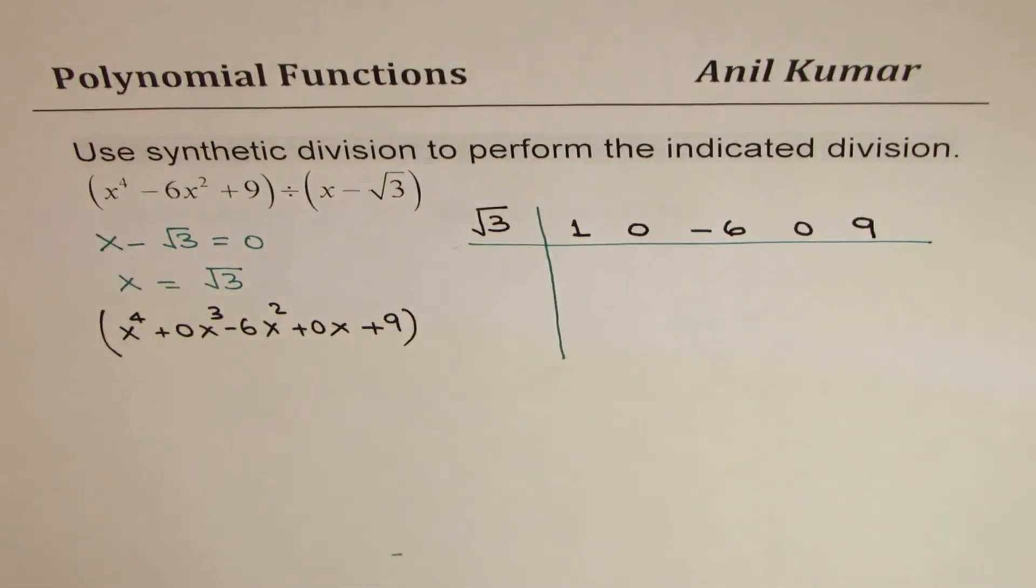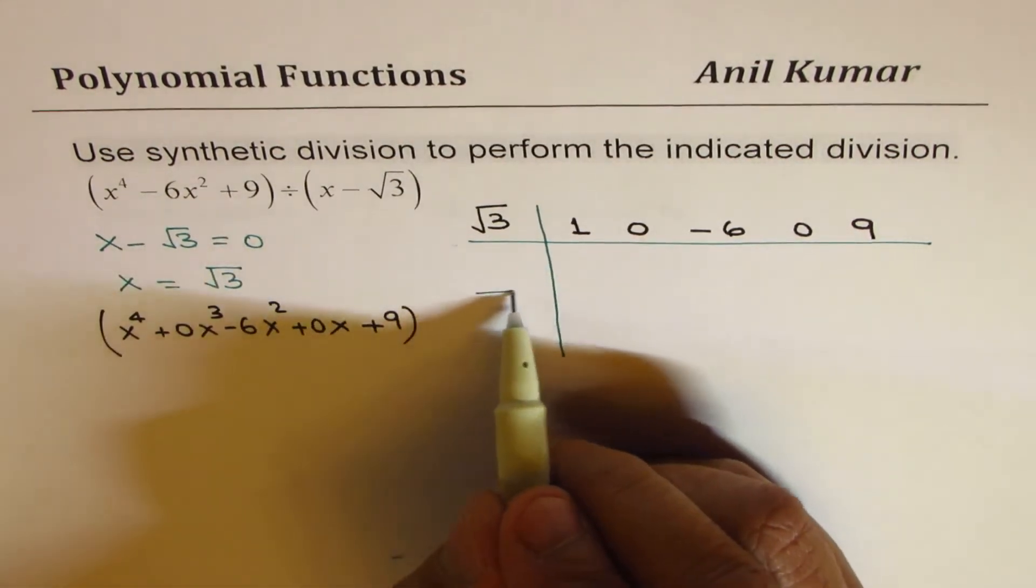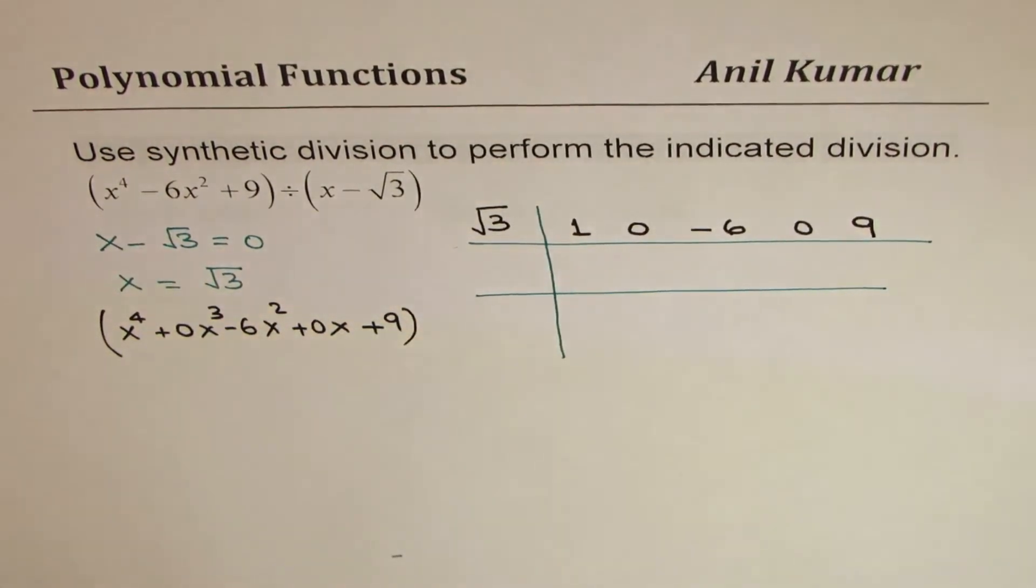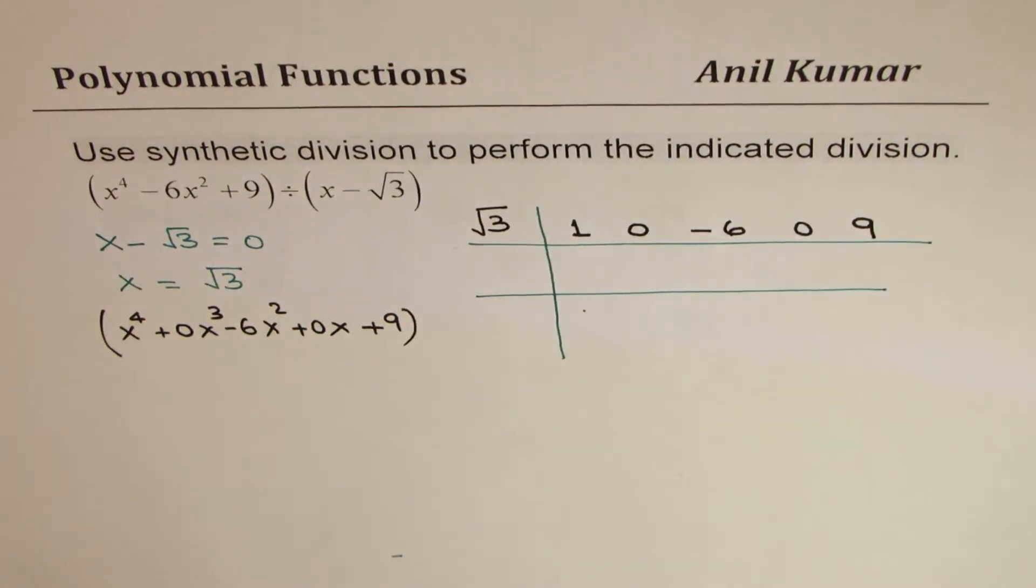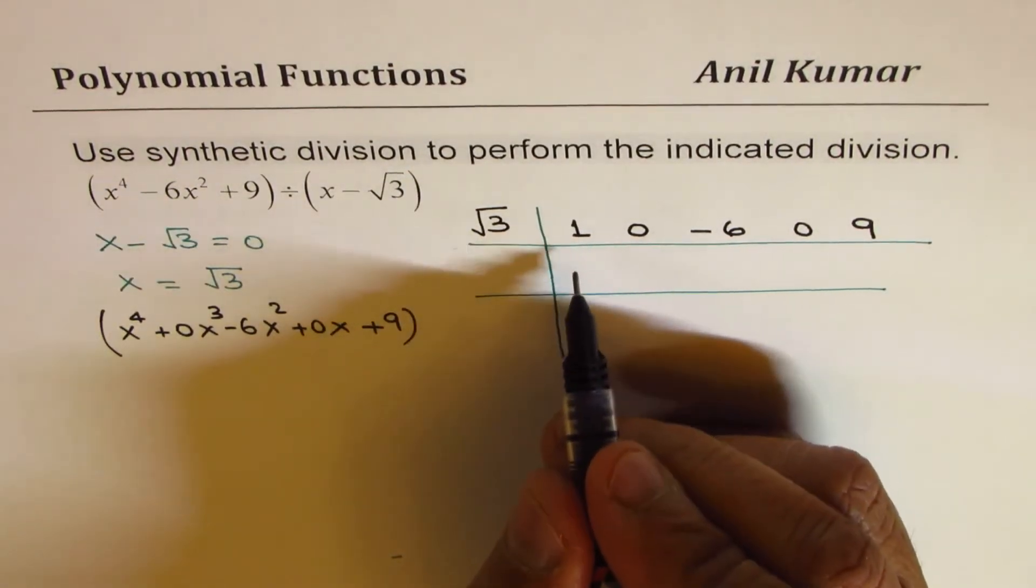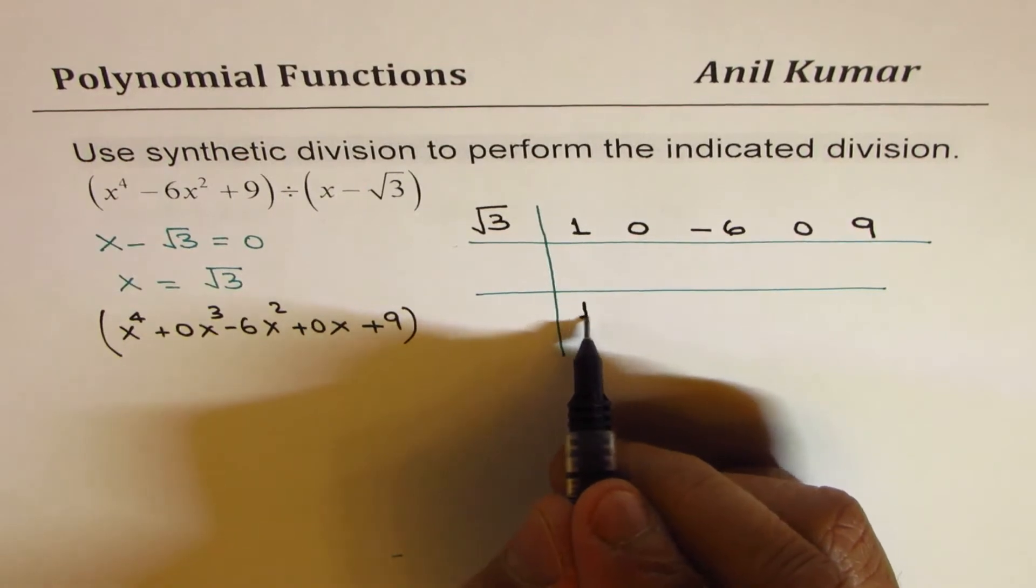Now that is the reason why my student has requested me to get the solution of this question. Placeholders are kind of important. Now, what we do here is bring down the first term, write it just there. It is 1 for us. So we will bring down 1.